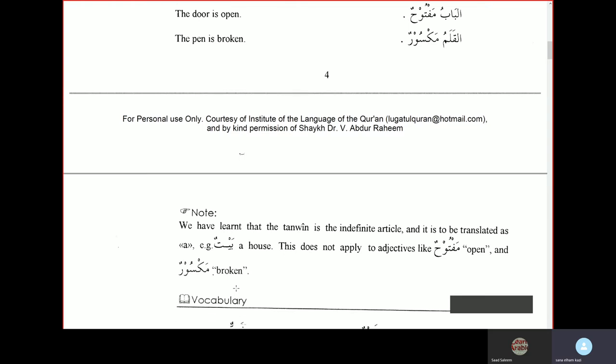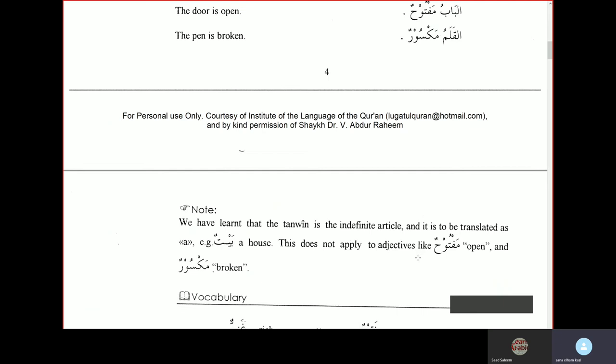We have learned that the tanwin is the indefinite article and it is to be translated as a. For example, baytun - the tanwin on ta makes it baytun, meaning a house. This does not apply to adjectives like maftuhun. Even though you write al-babu maftuhun, you do not say the door is a open. No, you just say maftuhun because it's an adjective. If you have learned that the tanwin is the indefinite article and should be translated as a, it does not apply to adjectives like maftuhun, which means open, and maksurun, which means broken.